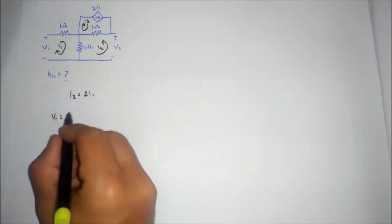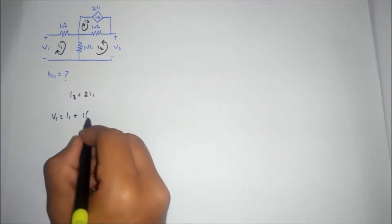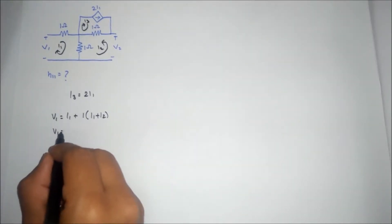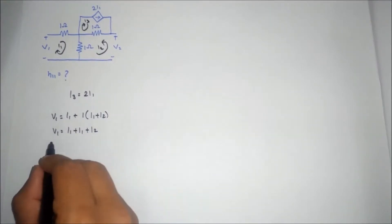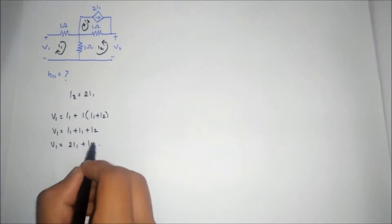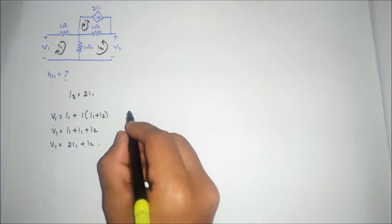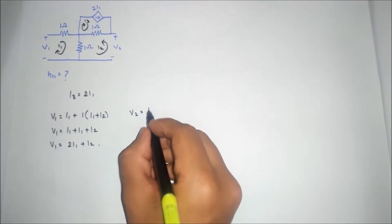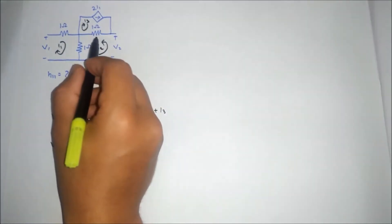For loop 1, V1 is equal to 1 times I1 plus 1 times (I1 plus I2), so V1 is equal to I1 plus I1 plus I2, which gives V1 equals 2I1 plus I2. Now for loop 2, V2 is equal to 1 times (I2 plus I3) plus 1 times (I2 plus I1).